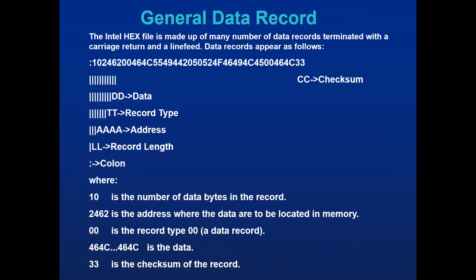For the general data record, Intel HEX contains a number of data records in the file. Take one example record: it starts with a colon, and LL — the record length — is 10, meaning 16 bytes are available. The address is 2462, the base address of that record. 00 is the record type for a general data record. The actual data follows with 16 bytes, and the last field 33 is the checksum generated using modulo 256.